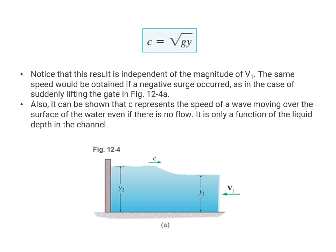Notice that this result is independent of the magnitude of the velocity of the flowing water. The same speed will be obtained if a negative surge occurred, as in the case of suddenly lifting the gate back up. It can be shown that C represents the speed of the wave moving over the surface of the water even if there is no flow — it is only a function of the liquid depth in the channel.